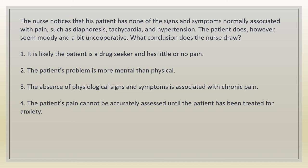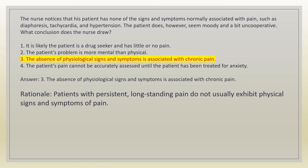The nurse notices that his patient has none of the signs and symptoms normally associated with pain such as diaphoresis, tachycardia, and hypertension. The patient does, however, seem moody and a bit uncooperative. What conclusion does the nurse draw? 1. It is likely the patient is a drug seeker and has little or no pain. 2. The patient's problem is more mental than physical. 3. The absence of physiological signs and symptoms is associated with chronic pain. 4. The patient's pain cannot be accurately assessed until treated for anxiety. Answer: 3. Rationale: patients with persistent, long-standing pain do not usually exhibit physical signs and symptoms of pain.